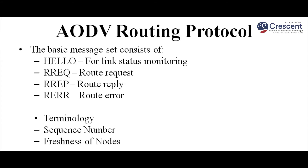AODV is a dynamic as well as self-starting multi-hop routing protocol between participating mobile nodes that wish to establish and maintain an ad hoc network. The basic message set consists of hello packet, route request, route reply, and route error. Two important terminology to know before working principles are sequence number — a monotonically increasing number — and freshness of nodes, which determines which route to the destination is the active route.